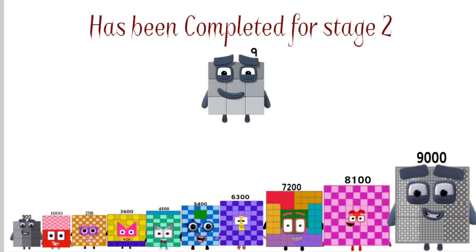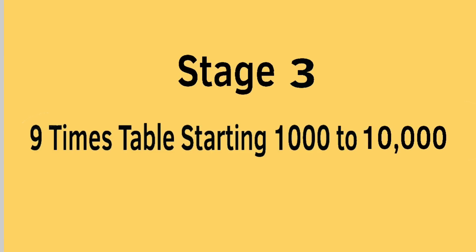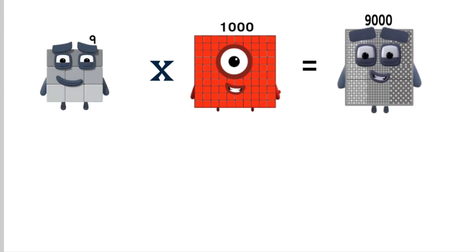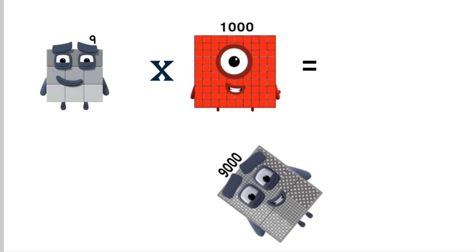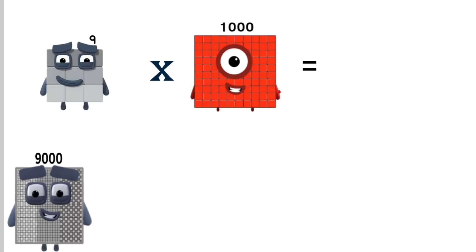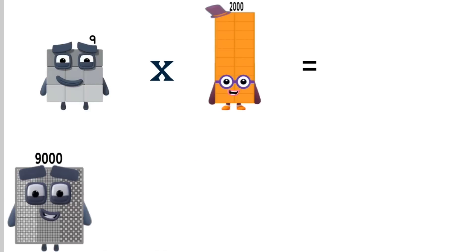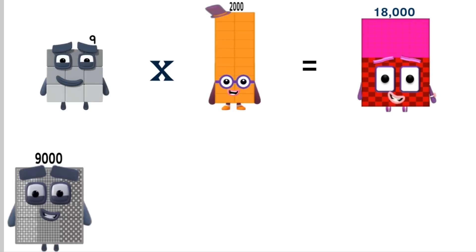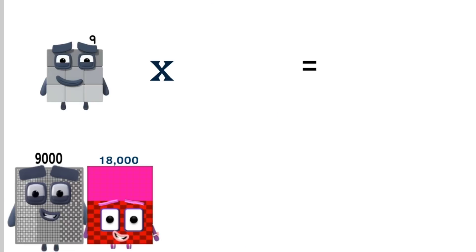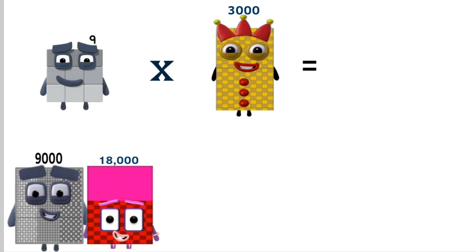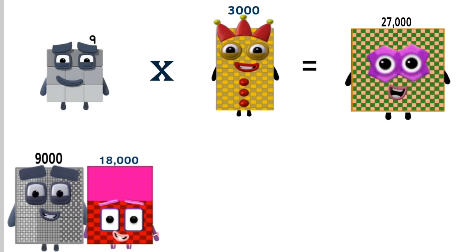Stage 2 has been completed. Stage 3. 9 times 1,000 equals 9,000. Times 2,000 equals 18,000. Times 3,000 equals 27,000.